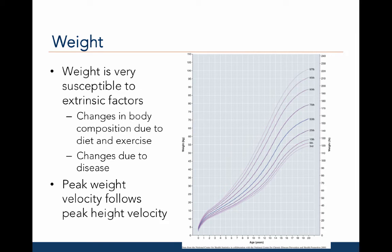When we look at the weight growth curve, we see a slightly different picture. First of all, the spread of weights for each year is quite large. For example, at age 20, a male could weigh between 120 kilograms to 220 kilograms. The reason there is so much variability in the weights compared with the variability in the height measurements is that weight is very susceptible to extrinsic factors. For example, changes in body composition due to diet or exercise. Weight can also change due to disease. Some diseases cause massive weight loss or massive weight gain.